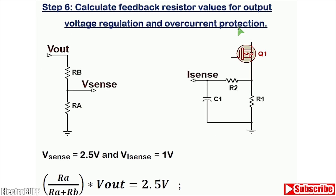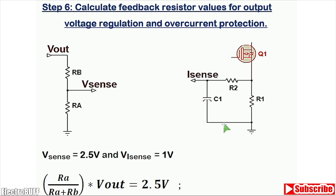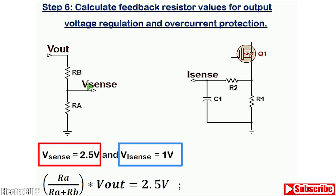The next step is to calculate the values for the feedback resistors and for the overcurrent protection. For the feedback, V out is 48V, and RA and RB form a potential divider network, where V sense is the voltage feedback to the feedback pin of the IC. For the overcurrent protection, the series resistor R1 detects the current flowing through the inductor and MOSFET, and through an RC filter made up of R2 and C1 it provides a voltage feedback to the current sense pin of the IC. For the UC3842, the voltage feedback sense reference is 2.5V and the current feedback voltage sense is set to about 1V.